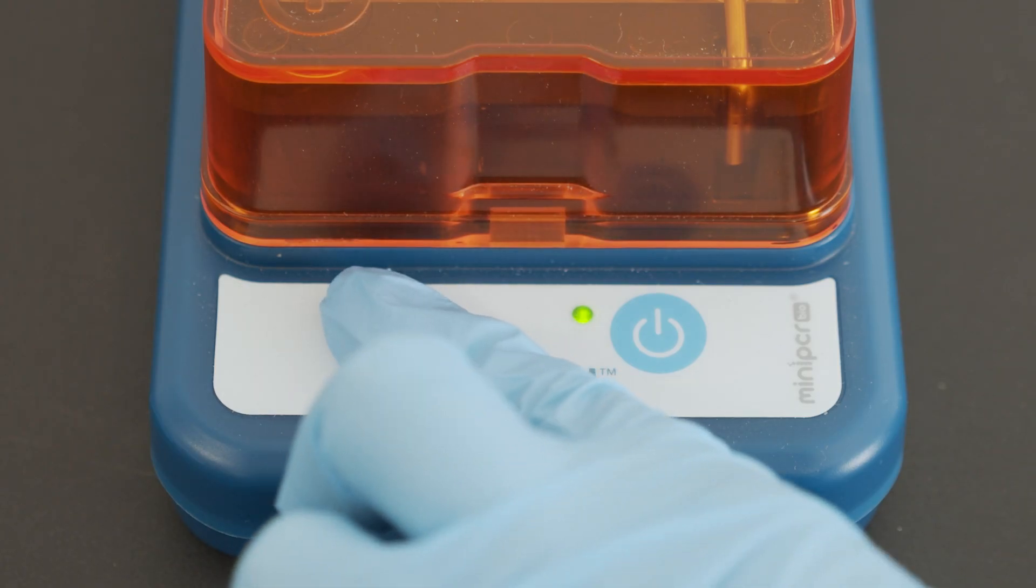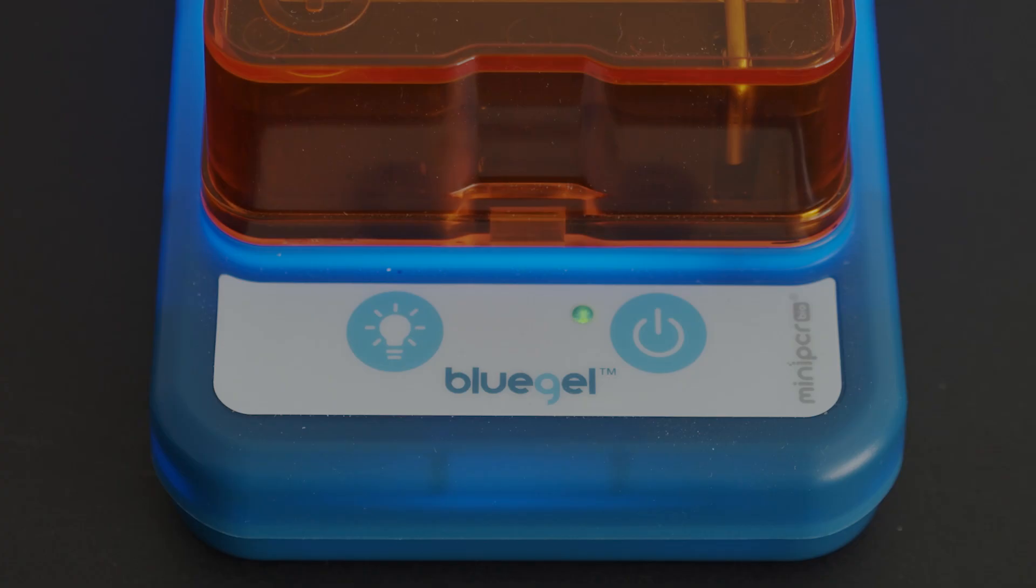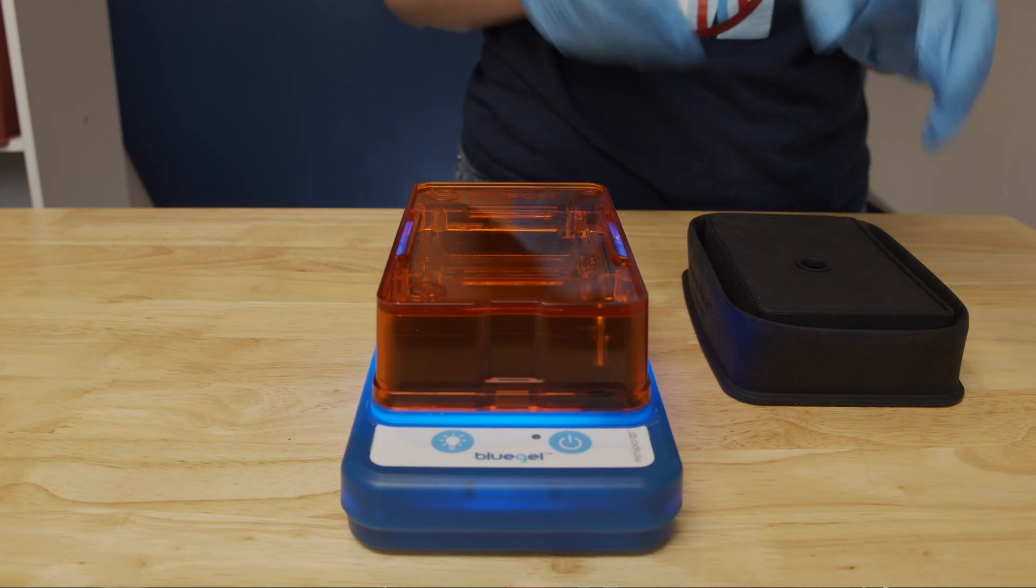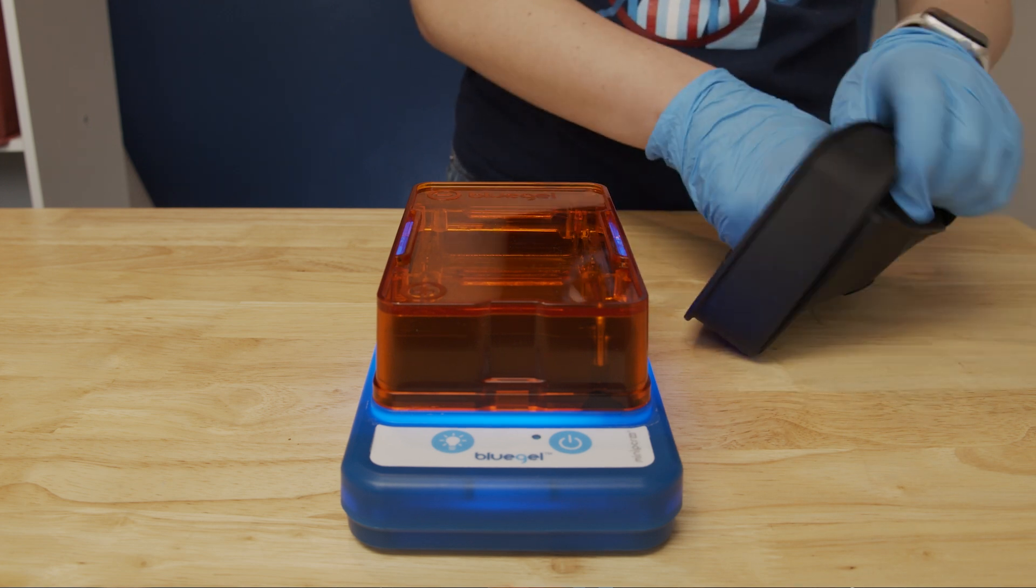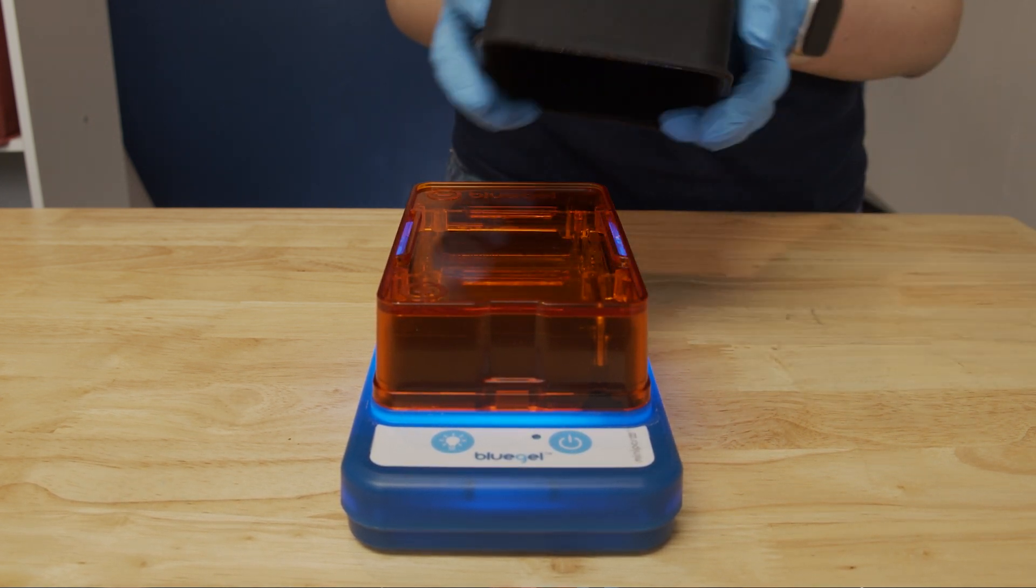Or place the black fold-over viewer over the orange cover and use a smartphone to take photos or a time-lapse. Simply pop the fold-over viewer open, place it over the orange cover, and set your phone camera lens over the hole in the fold-over viewer.